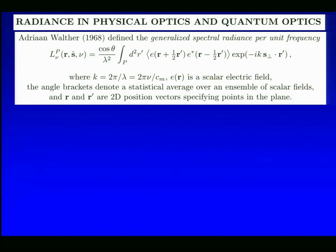In fact, it's still expressed at a general point in 3D. Cosine theta is the same n hat dot s hat as we've been using. And now we see an integral which involves the scalar electric field, perhaps just one component of the electric field vector, classically. And you see it's a quadratic functional of the field. It's the field shifted by plus a half r prime and minus a half r prime, and then multiplied by what's really a Fourier kernel and integrated over the plane P.